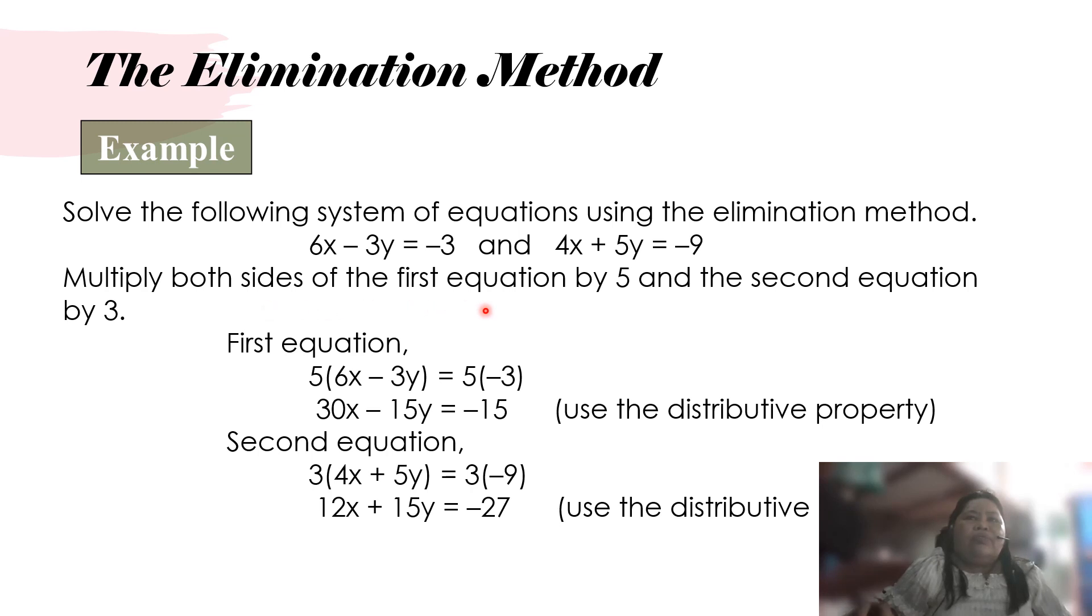Multiply both sides of the first equation by 5 and the second equation by 3. So the first equation, we multiply it by 5. Five times 6x is 30x, five times negative 3y is negative 15y, and five times negative 3 is negative 15, using the distributive property. For the second equation, we multiply it by 3. So we have 3 times 4x equals 12x, 3 times 5y equals 15y, and 3 times negative 9 is negative 27.